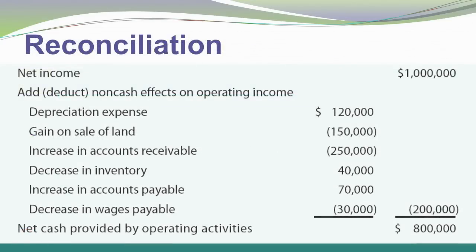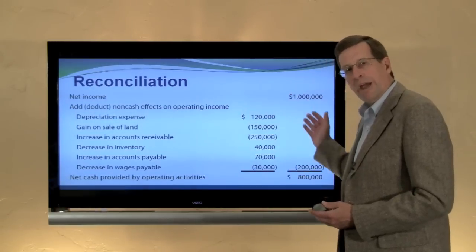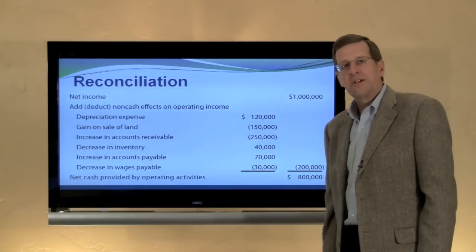We also need to do a reconciliation. If we're using a direct approach, there's a supplemental schedule reconciling net income to the cash flows from operating activities, as shown on this slide — net income plus depreciation expense minus the gain, and so forth, to arrive at the same $800,000 cash from operations. So a direct approach must be supplemented with this reconciliation, and the preparation of this reconciliation is the subject of the next module.